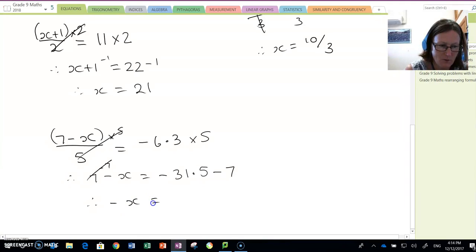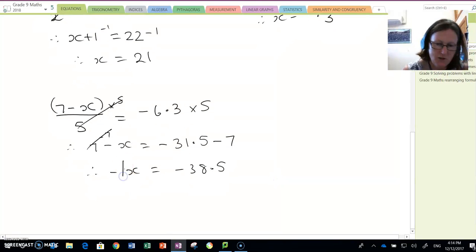So negative x is equal to negative 38.5. But I want to know what x is. I often suggest you put a 1 there to help. So I'm going to divide by negative 1 because then both of those things cancel. So x is equal to positive 38.5.